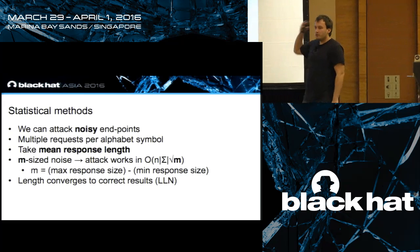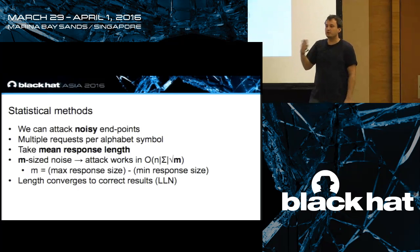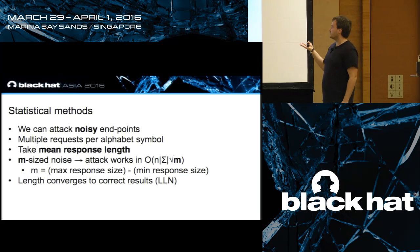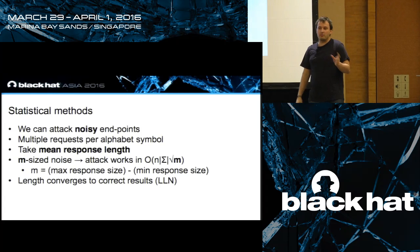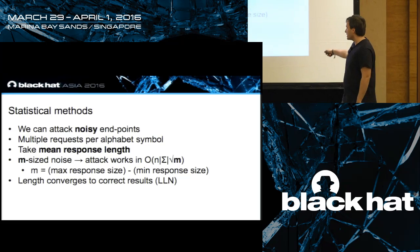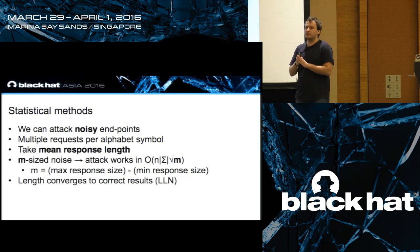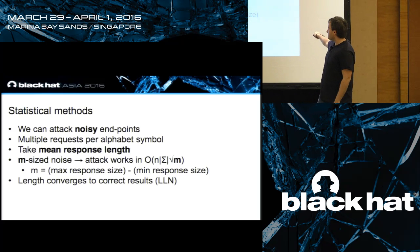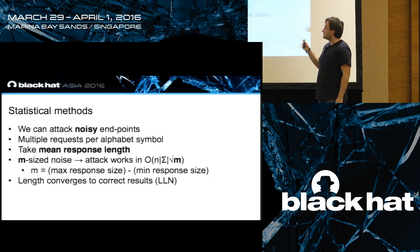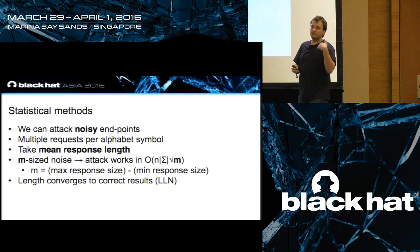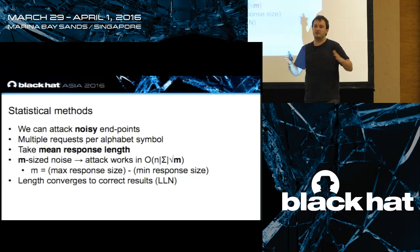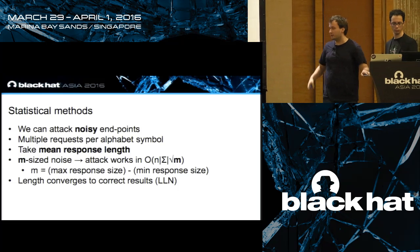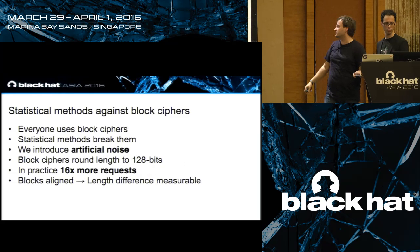Our statistical method involves making multiple requests per candidate symbol instead of just one, and then extracting a mean. This adds a square root of m parameter, where m is the difference between the maximum and minimum possible noise, making the attack slower but noise-resistant. The reason this works is the law of large numbers: if you take more samples from the same distribution, the variance becomes smaller and converges to the mean.